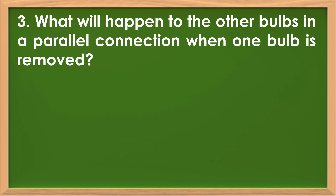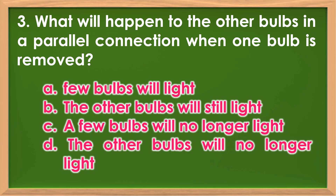Number 3: What will happen to the other bulbs in a parallel connection when one bulb is removed? A. Few bulbs will light. B. The other bulbs will still light. C. A few bulbs will no longer light. D. The other bulbs will no longer light. Very good, the answer is letter B.